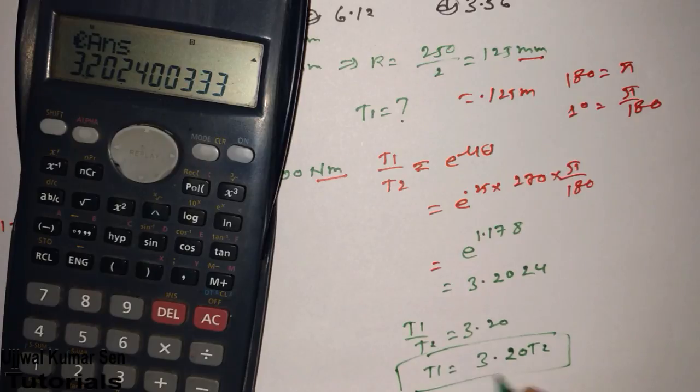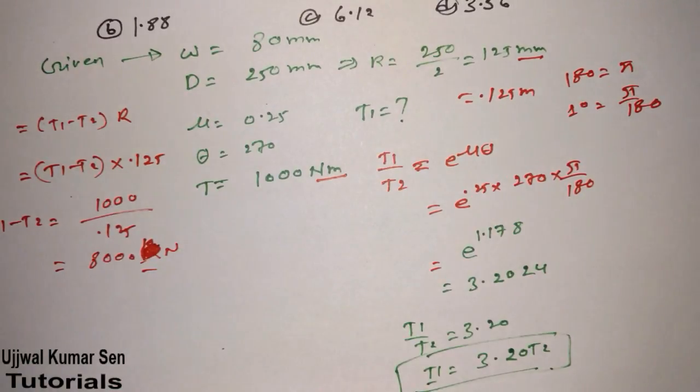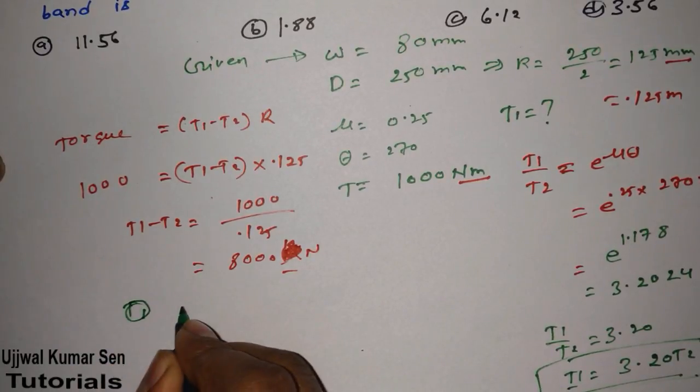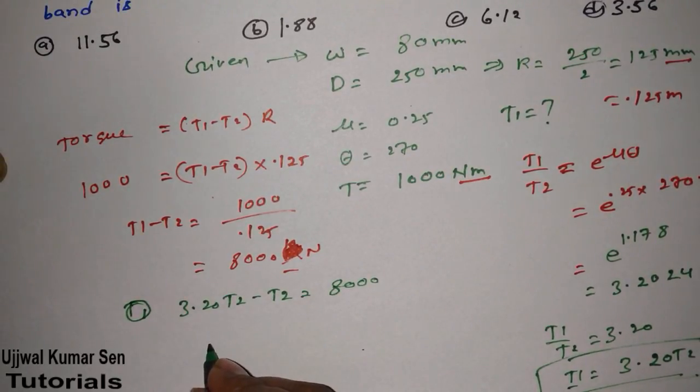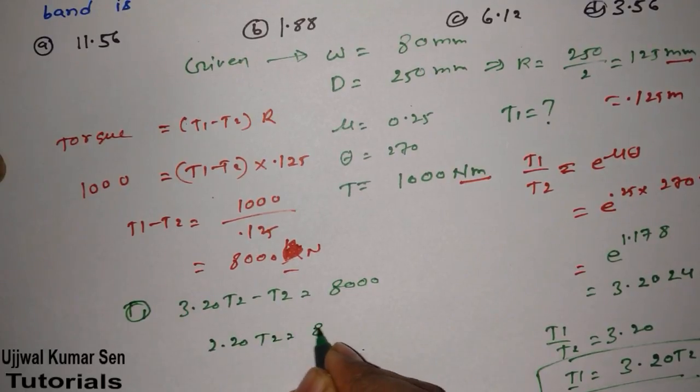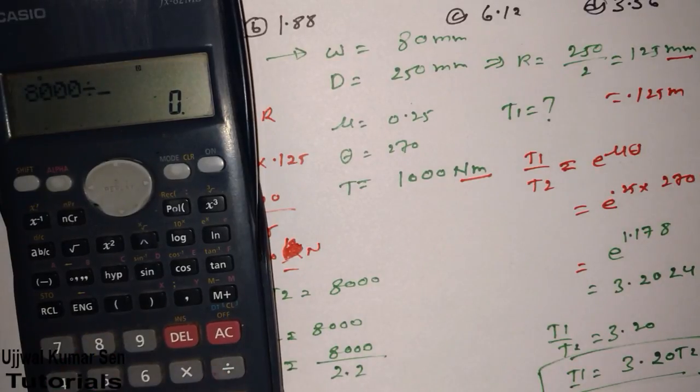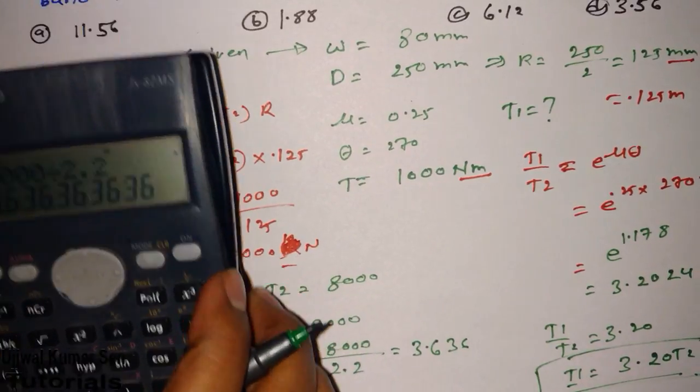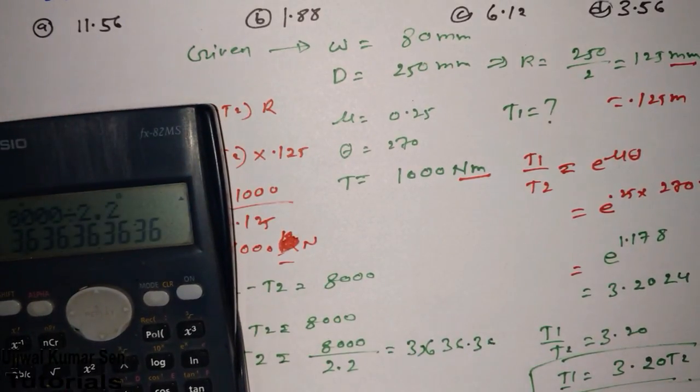So what we have to find out? We have to find out T1. Now let's put this value here. So we will put this value here. 3.20 T2 minus T2 is equal to 8000. Therefore, 2.20 T2 is equal to 8000. Therefore, T2 is equal to 8000 divided by 2.2. So what we got basically here, 8000, 2.2 we got here, 3636.36 is T2.